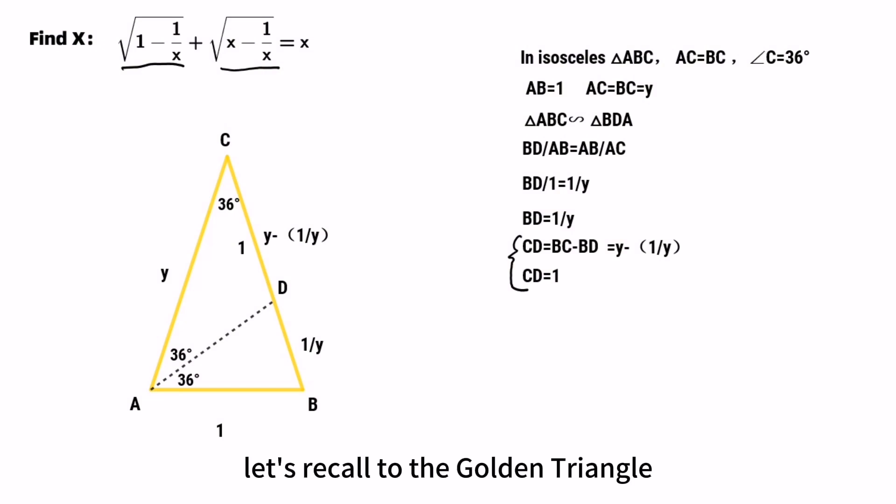Let's return to the golden triangle. Through point D, make a parallel segment DE to AC. We can calculate AE equals ED equals DB equals 1 over Y.